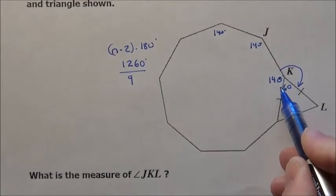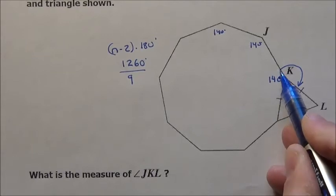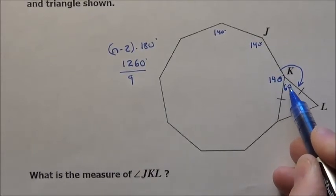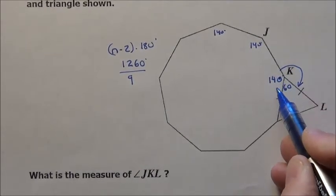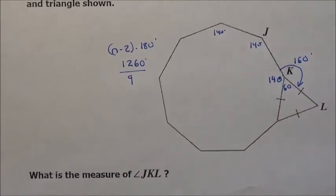Well down in here, if this is 140 and this is 60, that's going to add up to 200. Well, if you have 200 here, how much is left to complete and make 360? That's going to be 160 degrees on the outside.